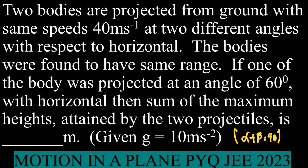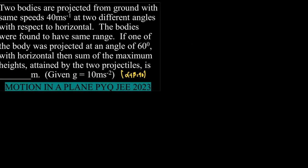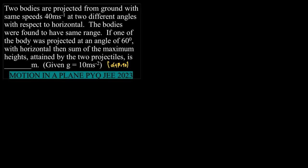Let's try to understand what the question says. Two bodies are projected from ground with same speeds 40 meter per second at two different angles with respect to horizontal. The bodies were found to have same range. If one of the body was projected at an angle 60 degree with the horizontal, the sum of the maximum height attained by the two projectiles is, right? So first what we'll do is we'll try to visualize the concept given here, the scenario given here.